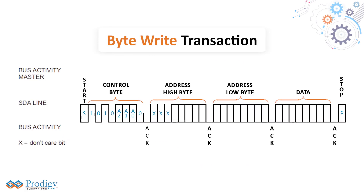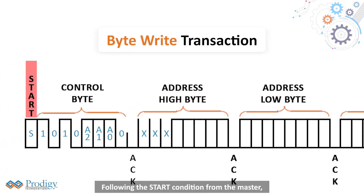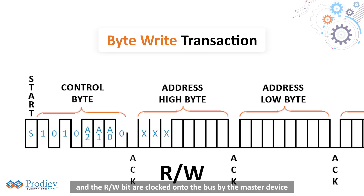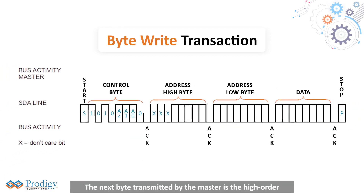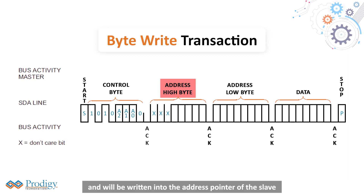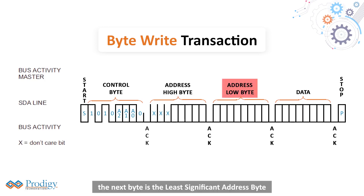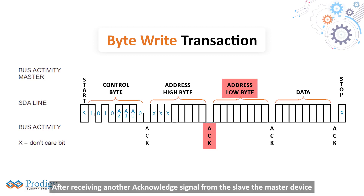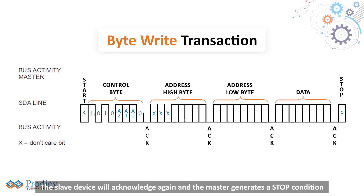The write transaction: following the start condition from the master, the control code (4 bits), the chip select (3 bits), and the R/W bit are clocked onto the bus by the master device. The next byte transmitted by the master is the high-order byte of the word address, written into the address pointer of the slave. The next byte is the least significant address byte. After receiving another acknowledge from the slave, the master transmits the data word to be written into the addressed memory location. The slave acknowledges again, and the master generates a stop condition.